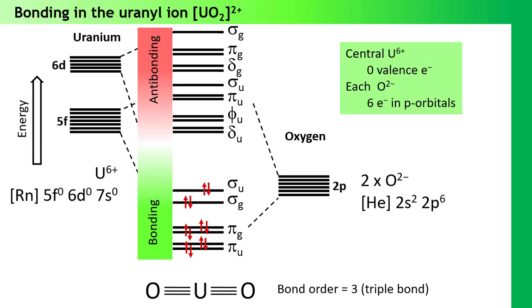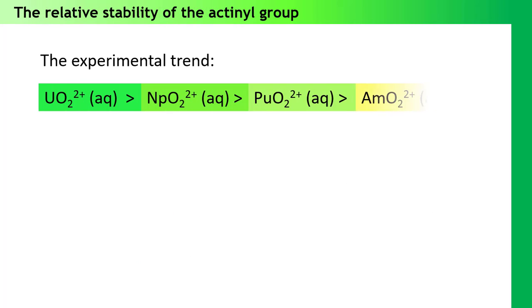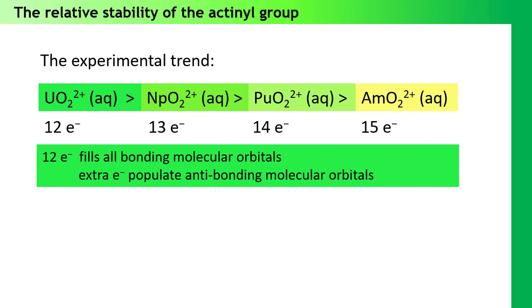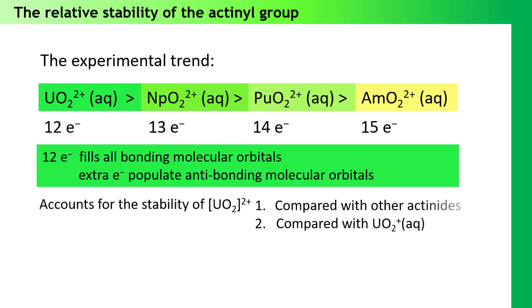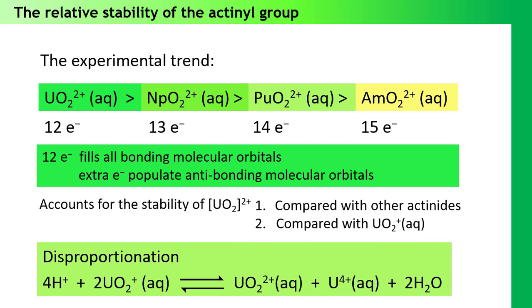So that was the uranyl ion. We also observe similar chemistry with neptunium and plutonium and americium. Though it turns out, as we progress along this series, there is a general decrease in the stability of this structure. Actually, that makes sense. While in uranium, all of the bonding molecular orbitals are filled, as we move along the series, we are at each step adding one more electron into an antibonding molecular orbital. It also accounts for the tendency of the uranium-5-plus uranyl ion, UO2-plus, to undergo disproportionation, giving equal proportions of uranium-4-plus and uranium-6-plus.